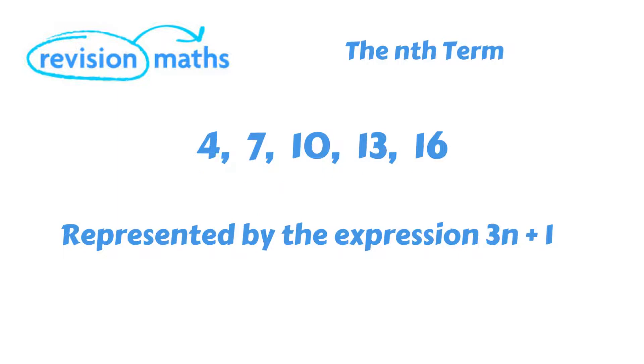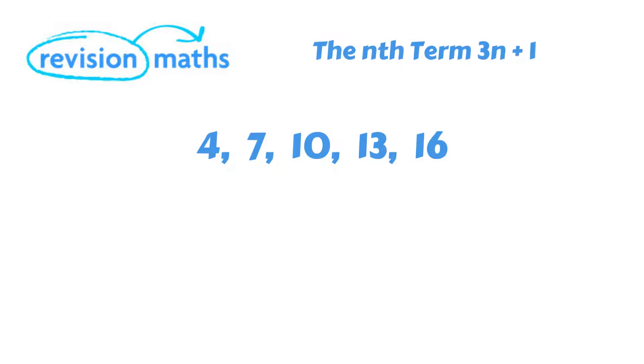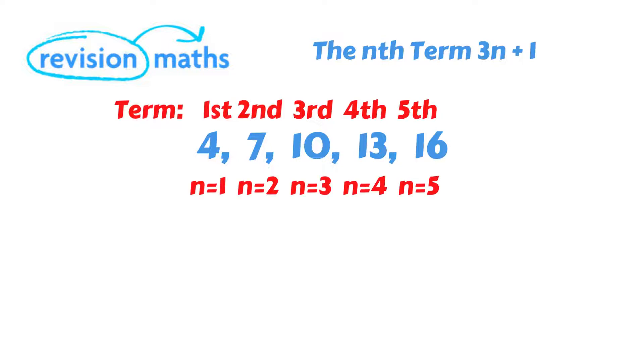This sequence can be represented by the following expression, 3n plus 1. The reason we use this expression is that it allows us to find any term in this sequence. If we look at our example, we can see that 4 is the first term, 7 is the second term, 10 is the third term and so on. We can use the letter n to represent the term. So the first term n equals 1 and the second term n equals 2.